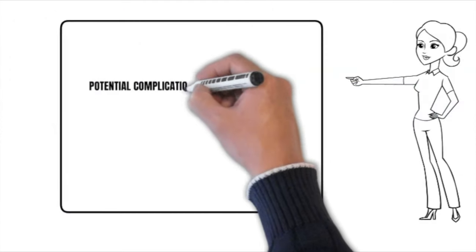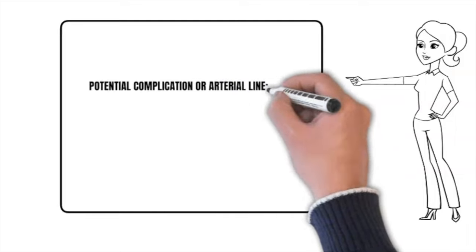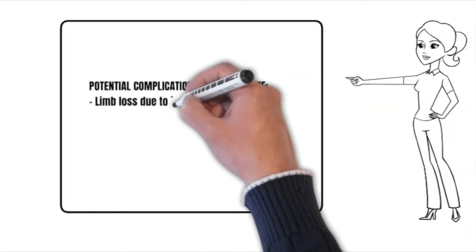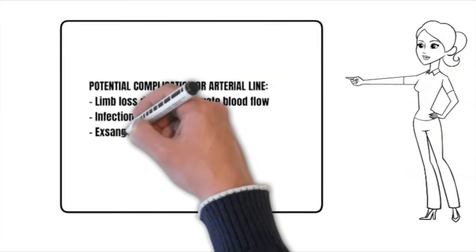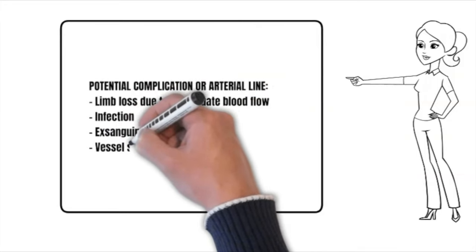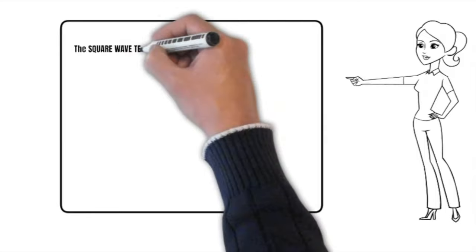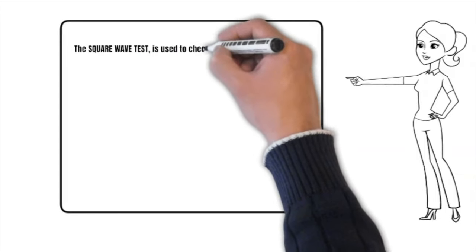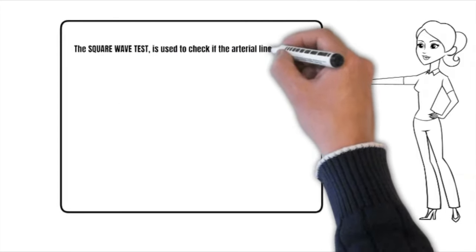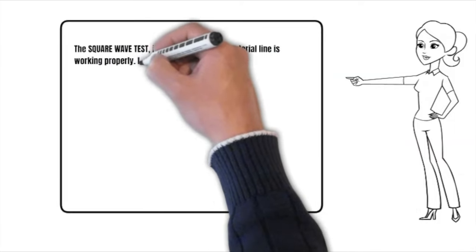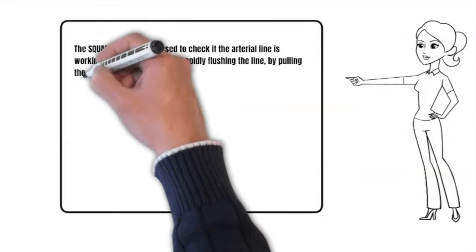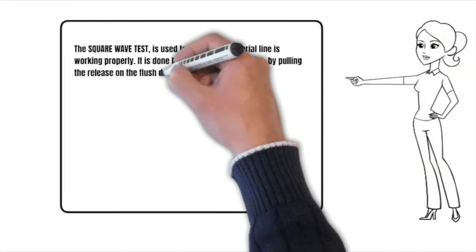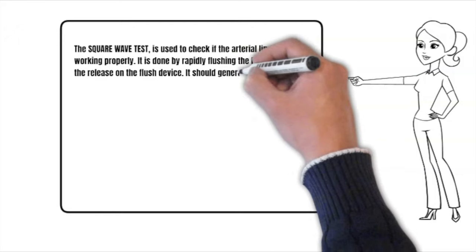Potential complications of arterial line: limb loss due to inadequate collateral blood flow, infection, exsanguination, and vessel scarring. The square wave test is used to check if the arterial line is working properly. It is done by rapidly flushing the line by pulling the release on the flush device.